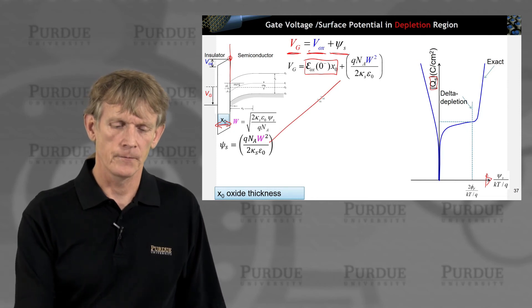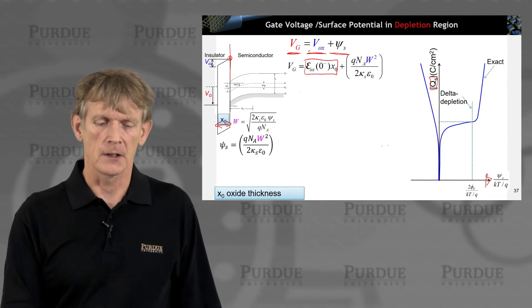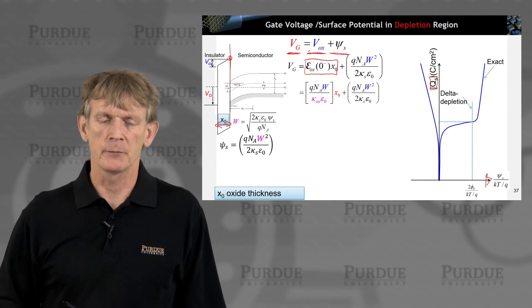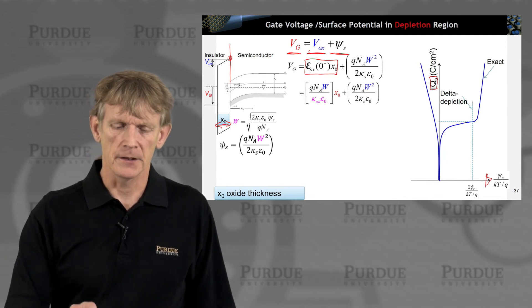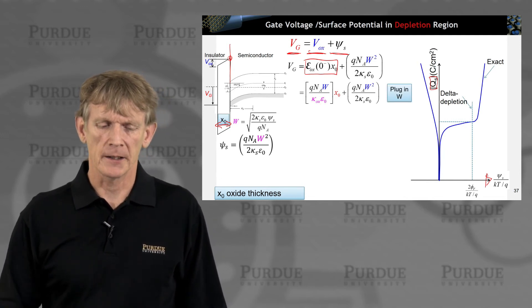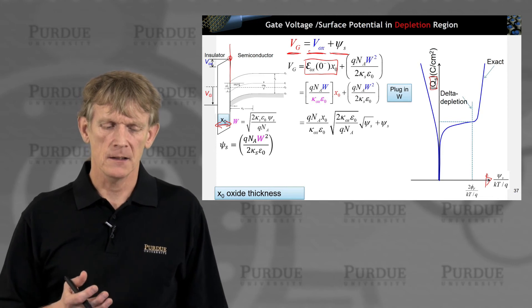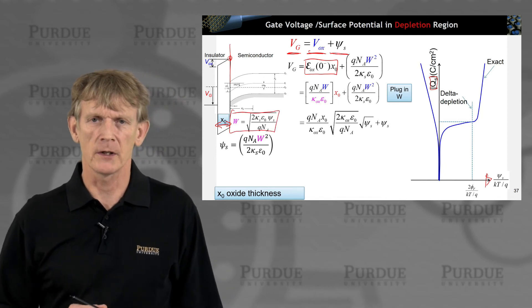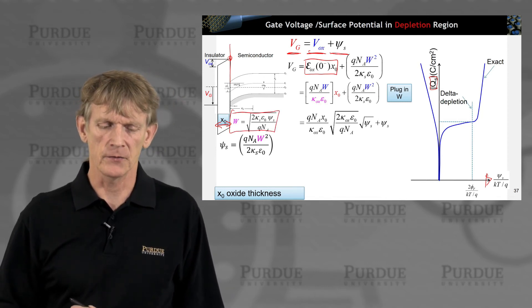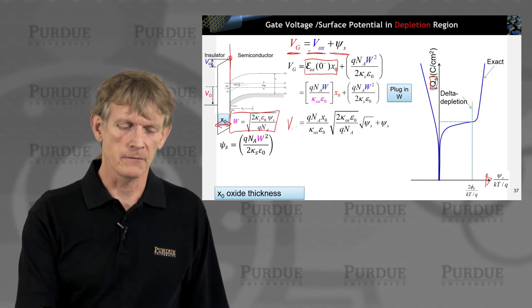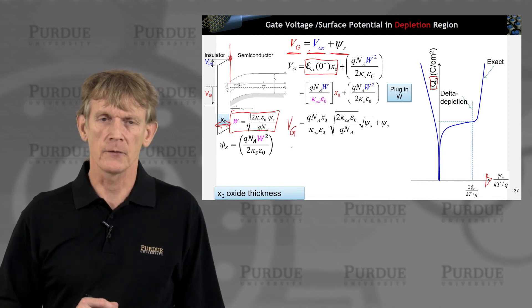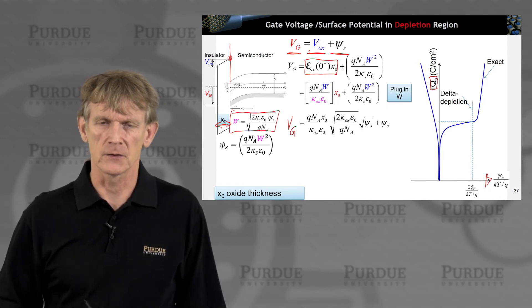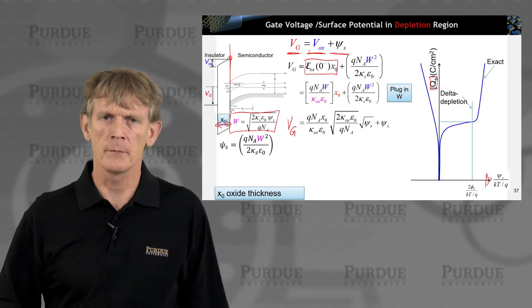And here we go. That's our surface potential. We had already obtained that. Now, we're plugging in the value for the electric field from the previous slide and carry this down. And we're plugging in the width. And we can see that if we plug in the width here, it goes as the square root of psi s, the surface potential. We have the expression here that the gate voltage depends as a sum of the square root of the surface potential and linearly as a function of the surface potential.